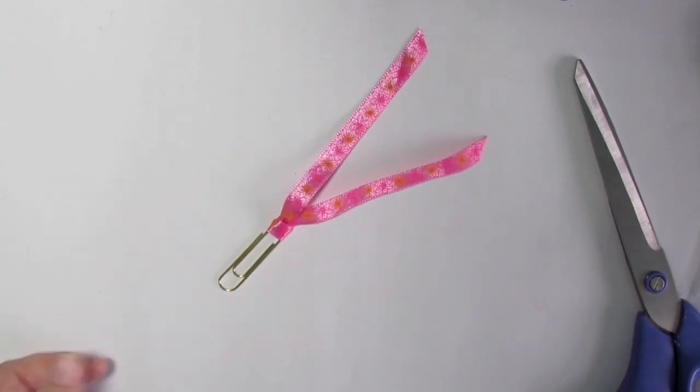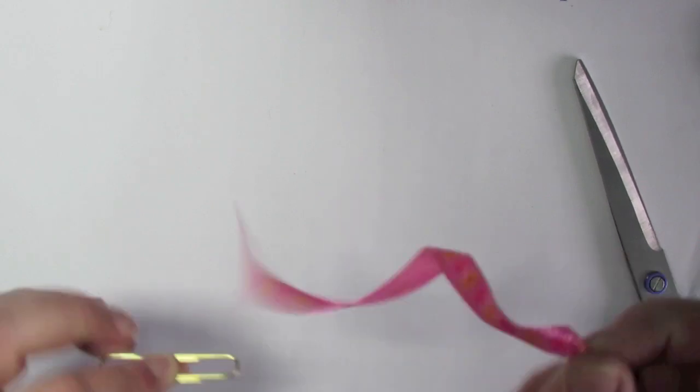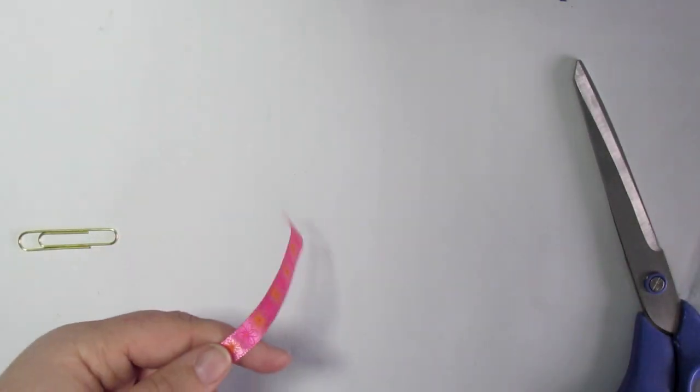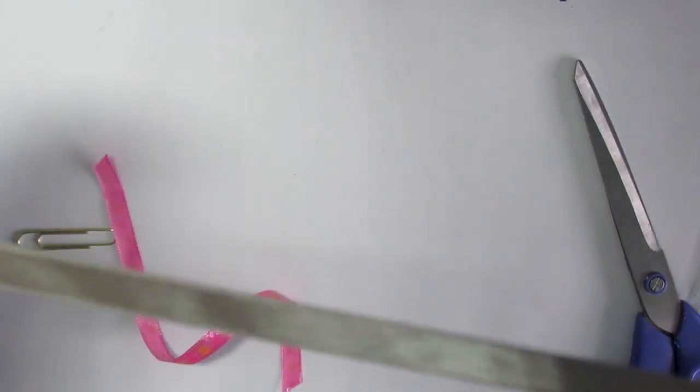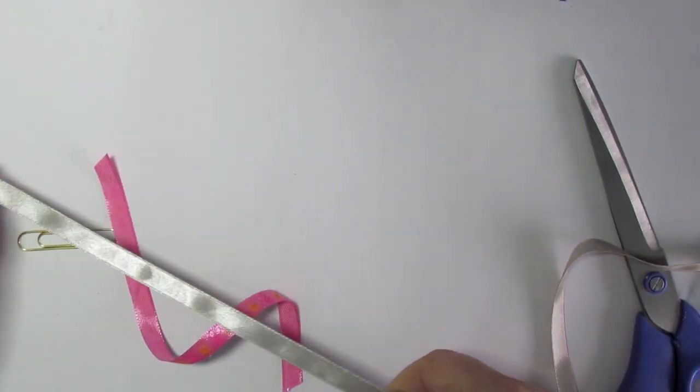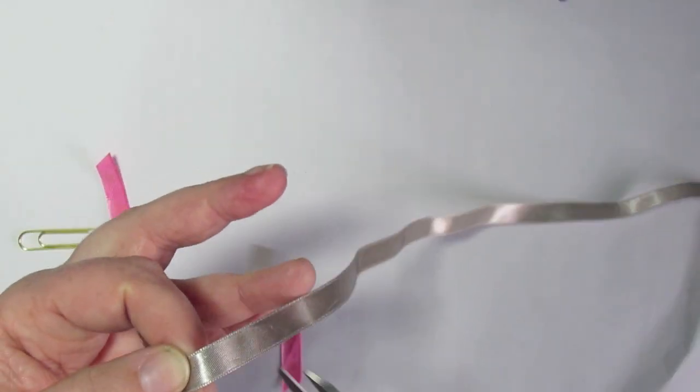So that's with one ribbon - obviously you can do more than one ribbon if you want to. So let's choose another piece, that's quite nice anyway. So yeah, you can either cut it to the same size or you can have it a different size if you want different lengths or different widths or anything like that.